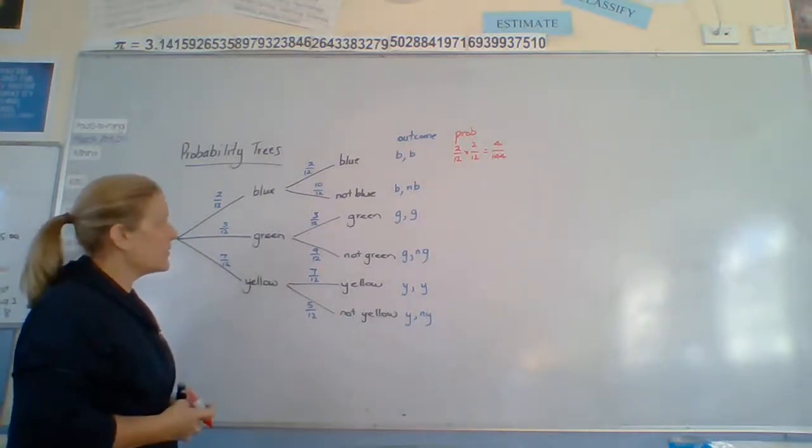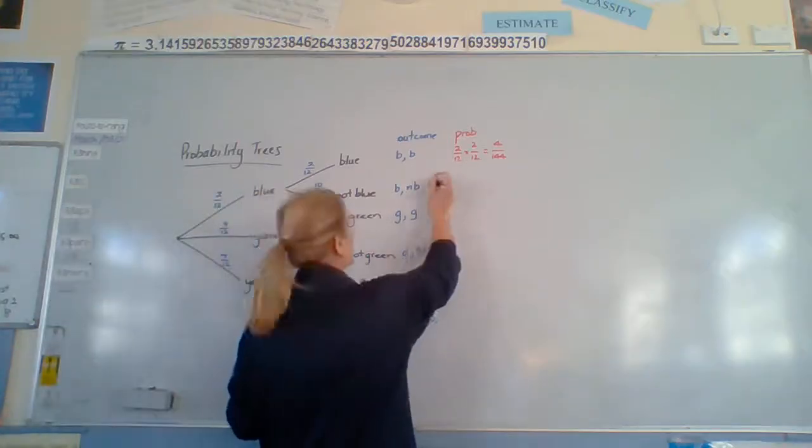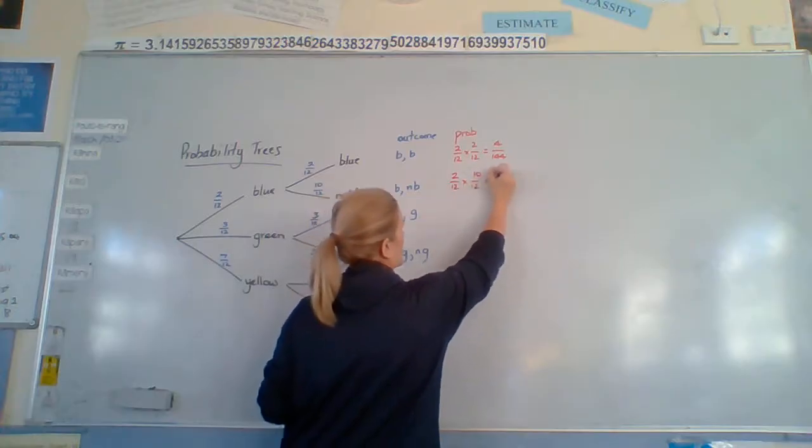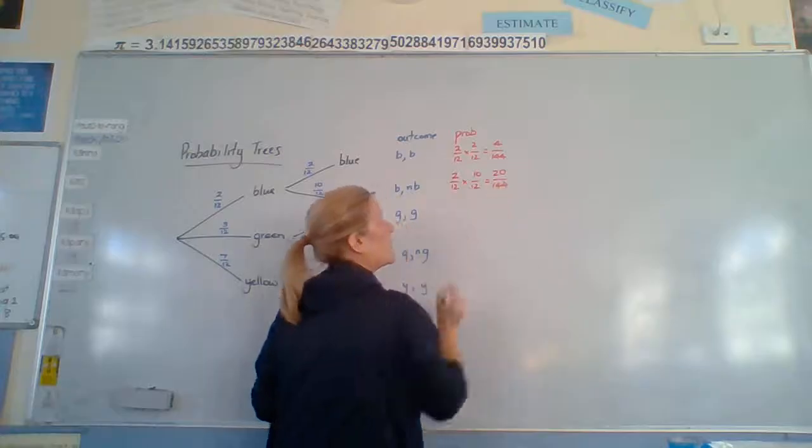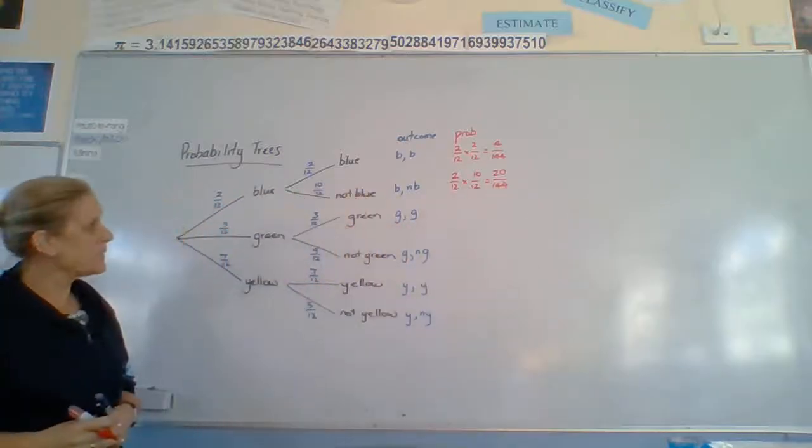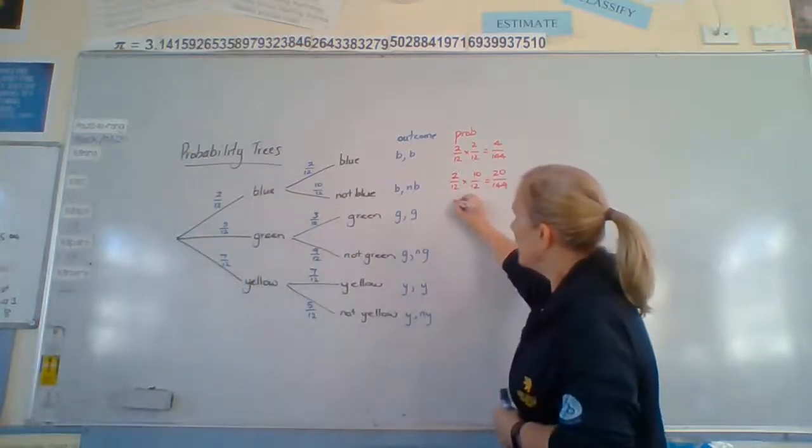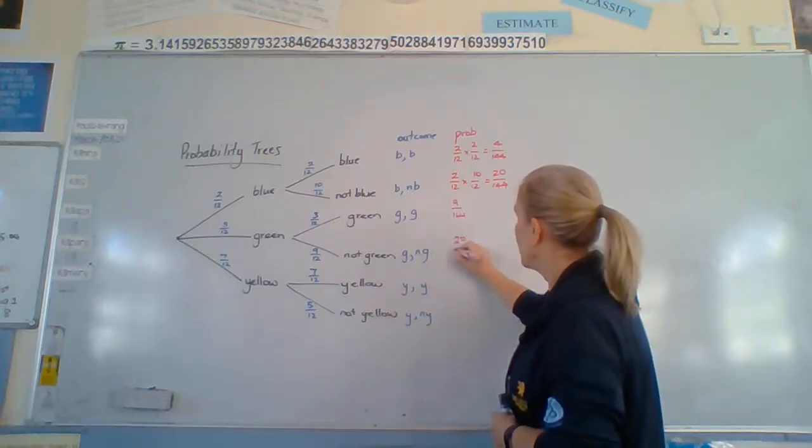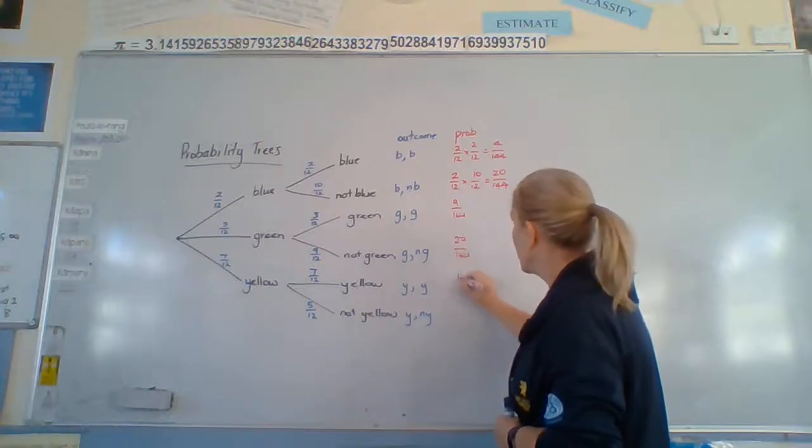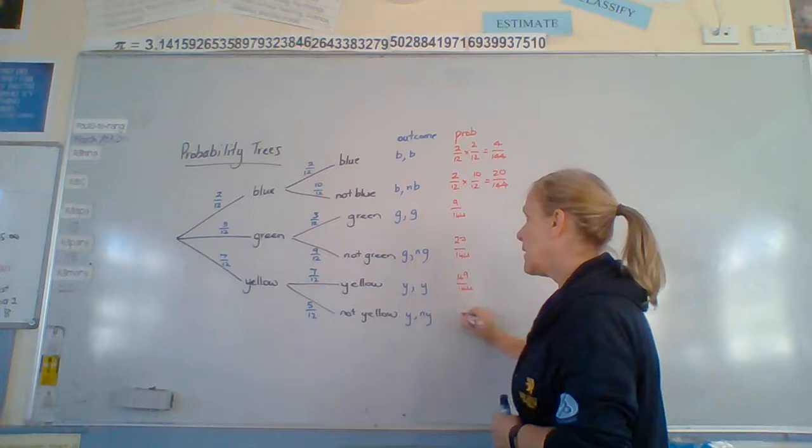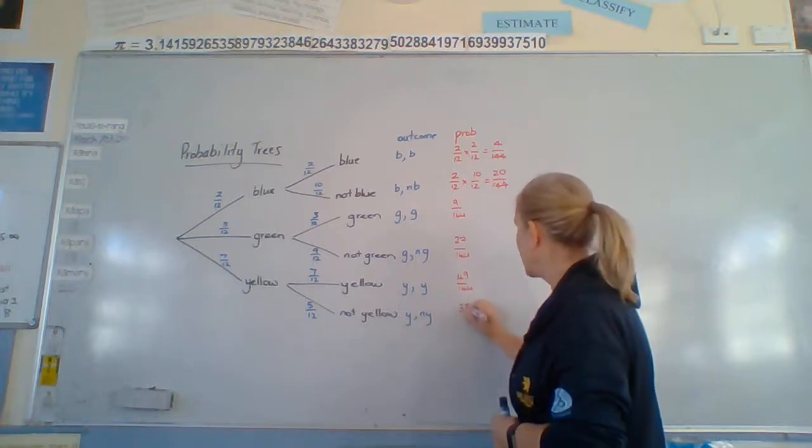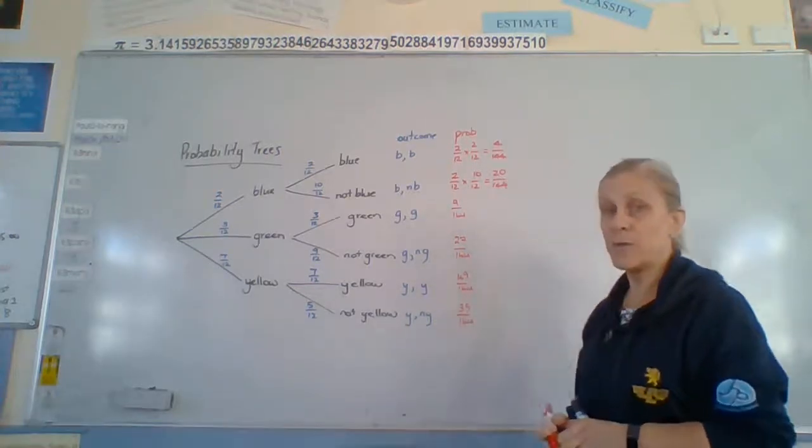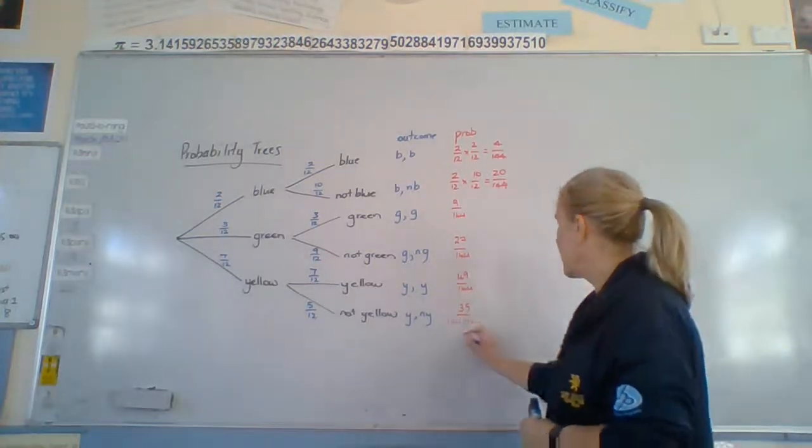Leaving it unsimplified, fine and dandy. So, we've got 2 twelfths times 10 twelfths equals 20 over 144. So, here we've got 9 over 144, 27 over 144, 49 over 144, and 35 over 144. And if we add up these numbers here, we should get 144 over 144. That's our check.